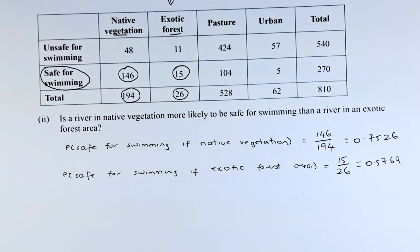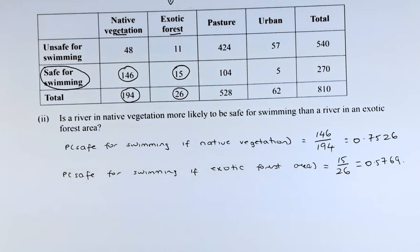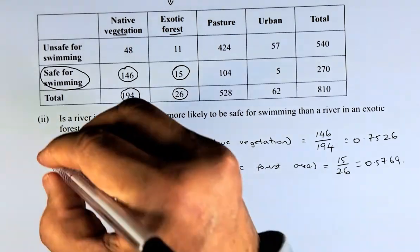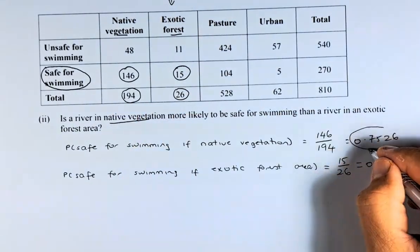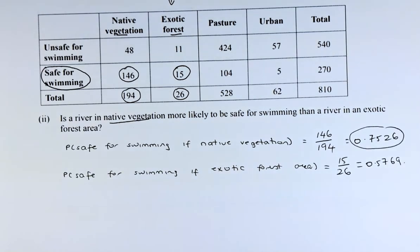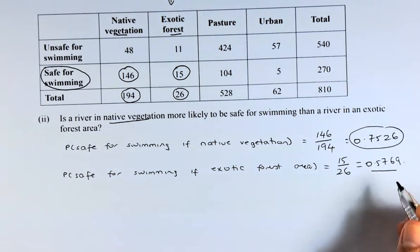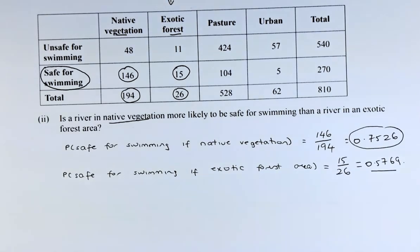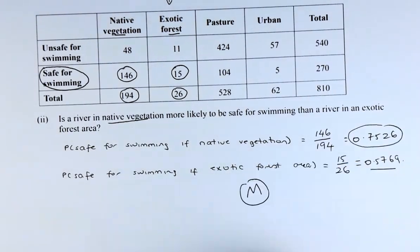So the question asks: is the river in native vegetation more likely to be safe for swimming than a river in exotic forest area? Yes — native vegetation is safer because the probability of being safe is 0.7526 compared to exotic forest which is 0.5769. If you can answer that, you can get a merit in this paper.